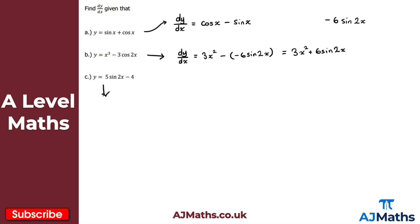For part c, y equals 5 sine 2x minus 4. Differentiating sine gives cosine, and the 2 multiplies the coefficient of 5, giving 10. The constant minus 4 differentiates to zero. So dy by dx is simply 10 cos 2x.